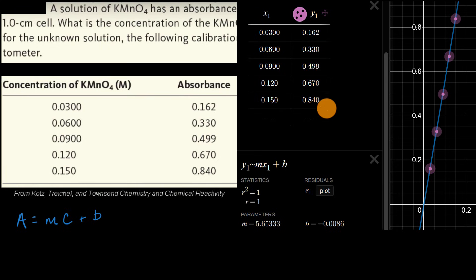I typed in these numbers, and it fit a linear regression line to them and got these parameters: M equals this value, and B equals this value.